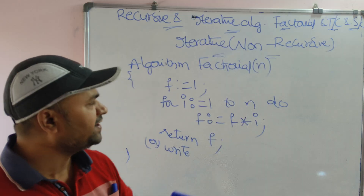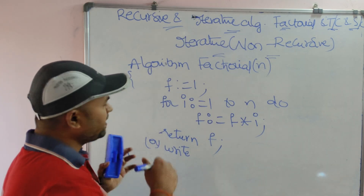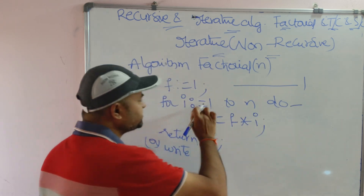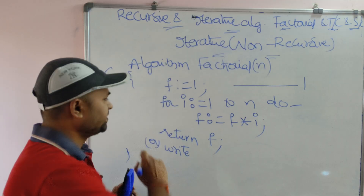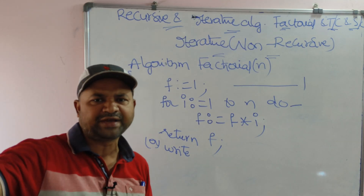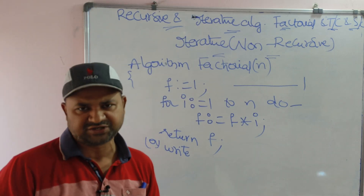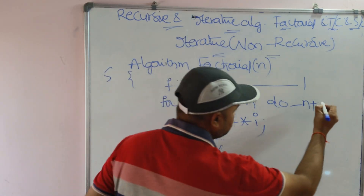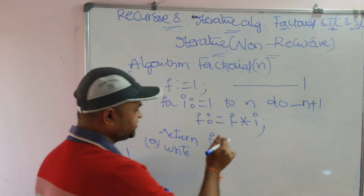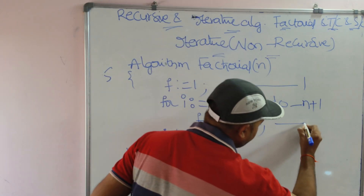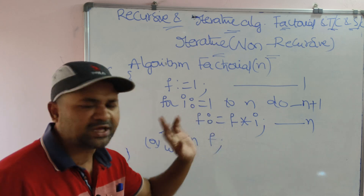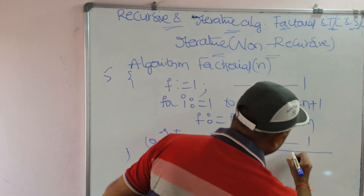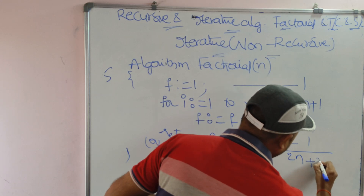Now we find the time complexity using the frequency count approach. For initialization, one step count is required. For the loop condition: if n = 5, then the condition is evaluated for 1 ≤ 5, 2 ≤ 5, 3, 4, 5, and when i = 6 the condition becomes false. So the condition is evaluated n + 1 times (including the false condition). The body of the for loop executes n times. The return statement executes once.